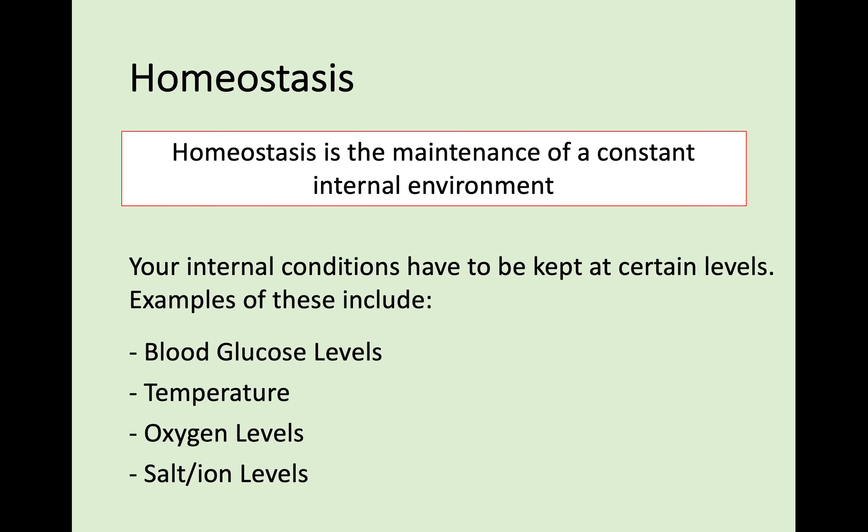Before we get into that, we need to come across the word homeostasis. Homeostasis is the maintenance of a constant internal environment — basically it's keeping your body in balance. Your internal conditions have to be kept at certain levels. For example, if your temperature gets too hot or drops too low, it can be very dangerous. This has to not be affected by changes in the external environment — whether you're in a very warm room or you go outside to the freezing cold, the inside of your body still has to be 37 degrees.